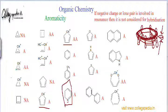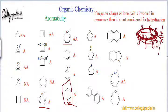The lone pair of nitrogen in pyridine is not involved in resonance because nitrogen is sp2 hybridized. So we do not count this lone pair as a pi electron. The pi electrons in pyridine are only 6, not 8, falling in the category of 4n+2 rather than 4n. Therefore, pyridine is indeed aromatic.